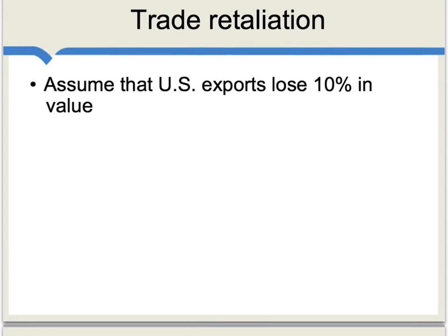It should be noted there was also a trade retaliation effect. Because the U.S. put Smoot-Hawley on its imports, other nations over time retaliated. It's difficult to estimate how big an effect this is, but Irwin estimates that as a result of retaliation, U.S. exports lost about 10% of their value. That will get the cost of Smoot-Hawley higher, but a lot of that retaliation came a bit later, and it still doesn't establish the tariff as a driving force behind the Great Depression.